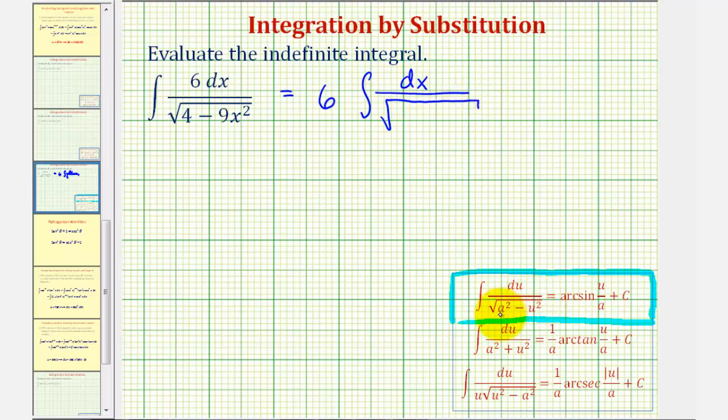Looking at our formula, we have a squared minus u squared, which is good because 4 is a perfect square, and so is 9x squared. Let's write this as 2 squared, which is 4, minus 3x squared, which is 9x squared.